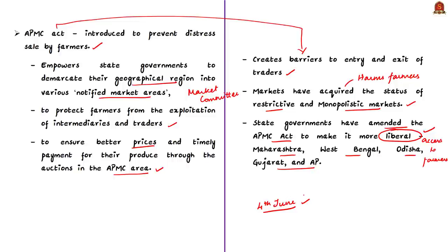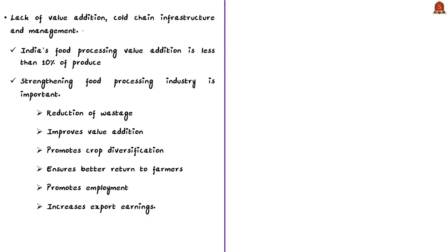Other issues in the agriculture sector include lack of value addition, lack of cold chain infrastructure, and inadequate management. India's food processing value chain covers less than 10% of produce, whereas in most developed economies this is about 100 to 300%. Strengthening the food processing industry is an important aspect, as a well-developed food processing sector helps in reduction of waste, improves value addition, promotes crop diversification, and ensures better returns to farmers, besides promoting employment and increasing export earnings.